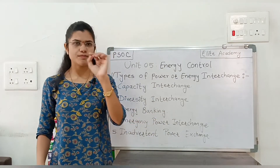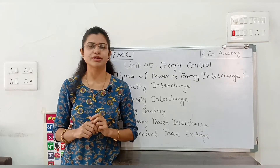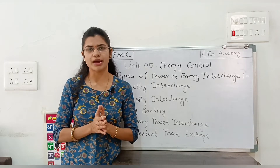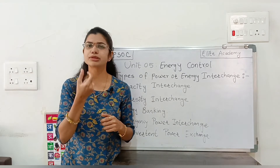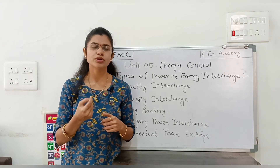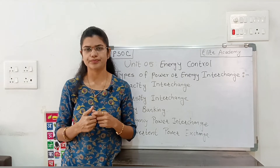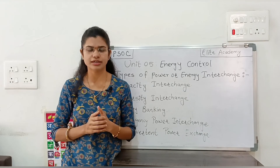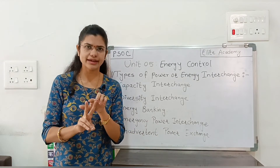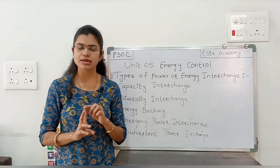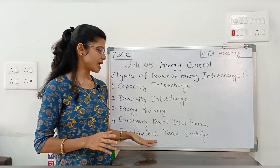The last type is inadvertent power exchange. To understand this concept with a simple example: suppose you are traveling and your mobile recharge runs out, and you urgently need to make an emergency call. You borrow 10 or 20 rupees as a loan from a friend. The next day by 4 PM you have to return that loan — after recharging, the amount is deducted. Similarly, in inadvertent power exchange, two plants have an agreement: whatever power you borrow, you must return it the next day at the same time.